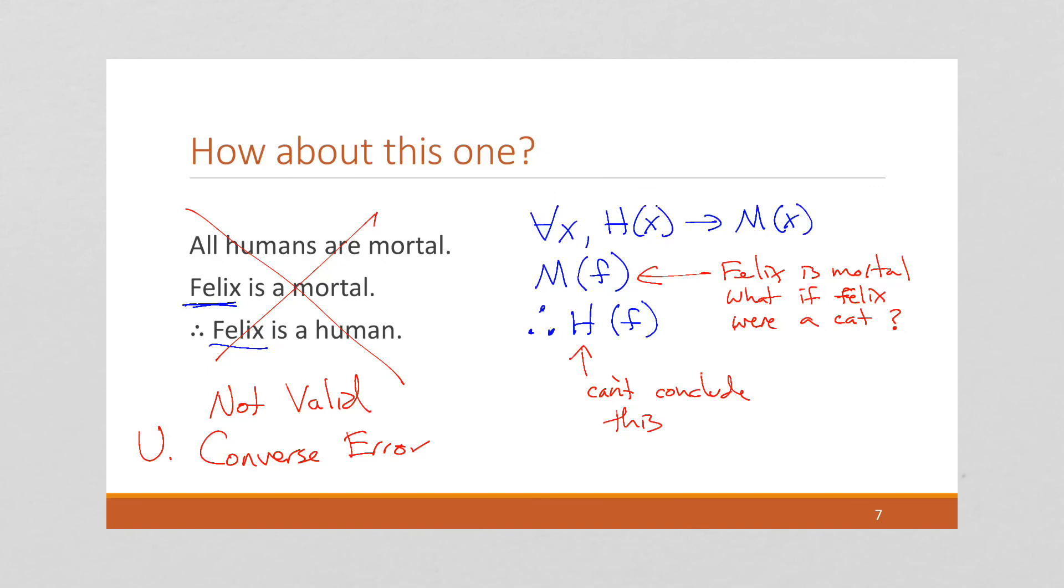It is indeed true. So this would be sound if it were valid because humans are mortal. That's true. But we cannot conclude that just because we know that something is mortal that that thing must be human. Felix could be a cat or it could be a cow or anything other than human. Or it could be a human. But we can't conclude that. We can't conclude that it's human.